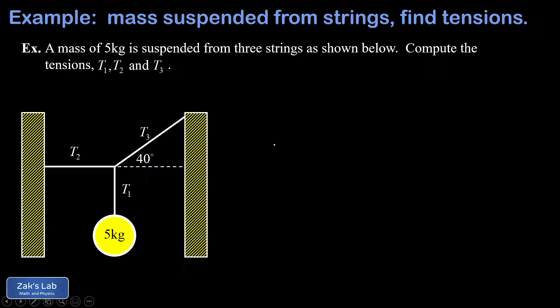In this video we're looking at a static equilibrium problem where we have a mass suspended from three strings, and our goal is to find the tension in each one of those strings. Our primary tool is that we know the sum of all forces on any part of this system must add up to zero.